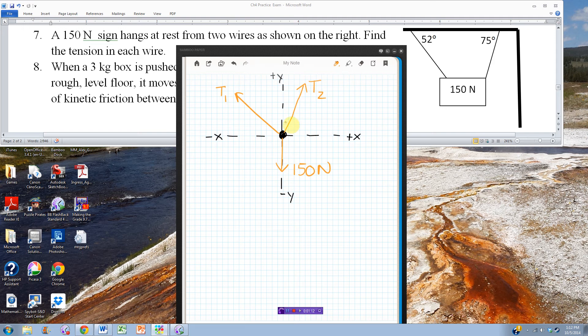Now, according to this, T1, if this angle is 52, then this angle should be 52. A little geometry there. And if this angle is 75, then this angle should be 75.